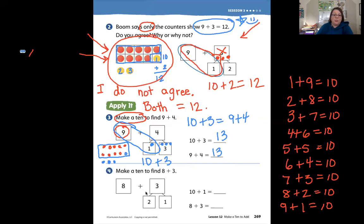Now let's go to the last problem. It says make a ten to find eight plus three. Looking at eight and three, eight is my greater number, so I'm gonna start with eight. Count with me. One, two, three, four, five, six, seven, eight.